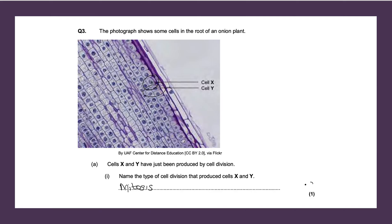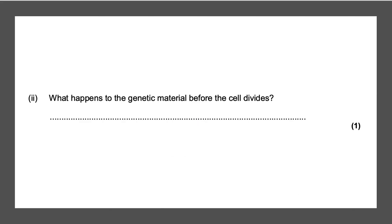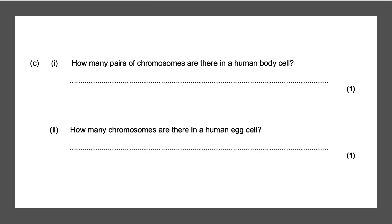Next question: what happens to the genetic material before the cell divides? Before the cell divides, the genetic material replicates — it is copied and duplicated. Any one of those answers gives you your one mark.